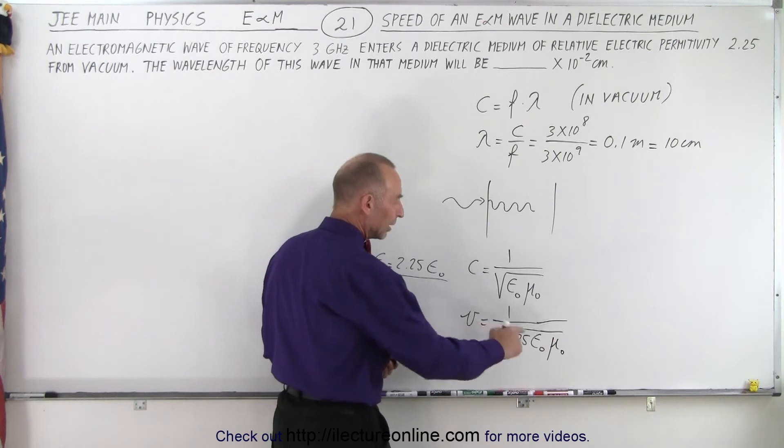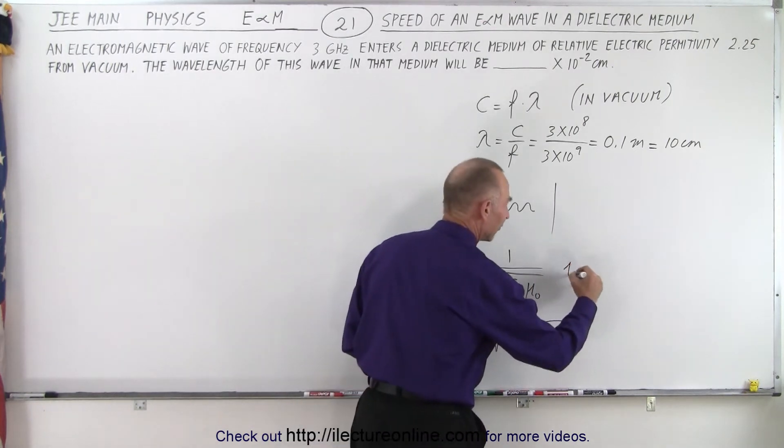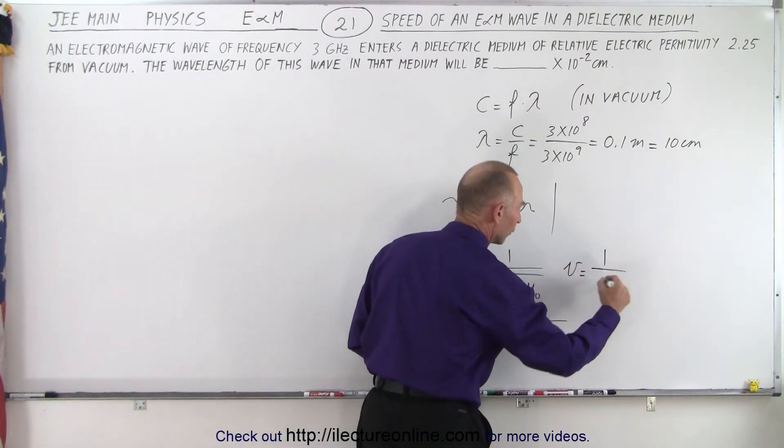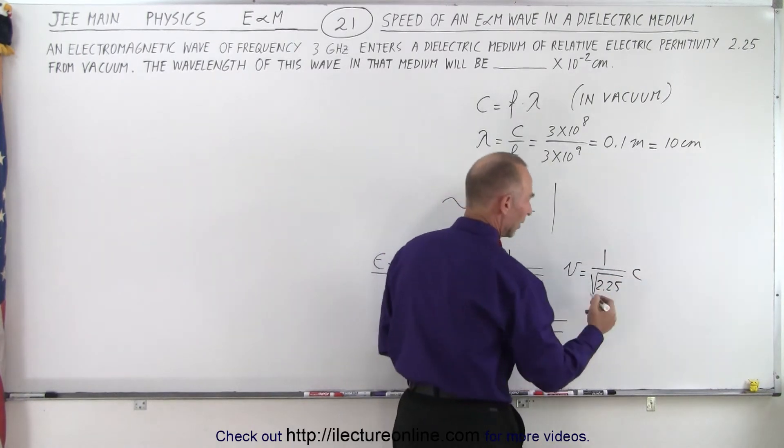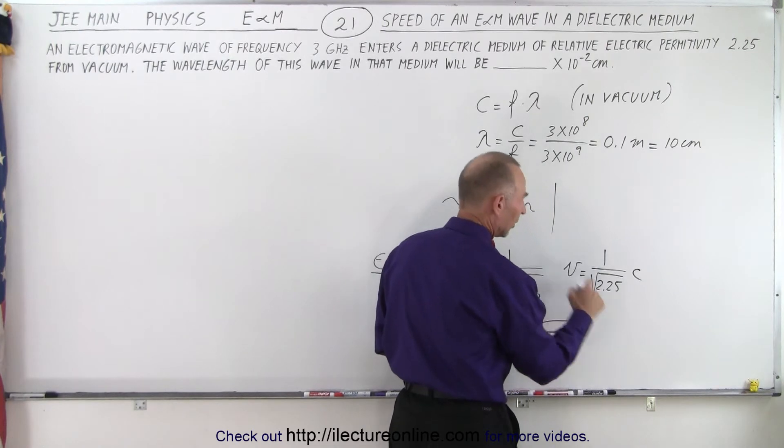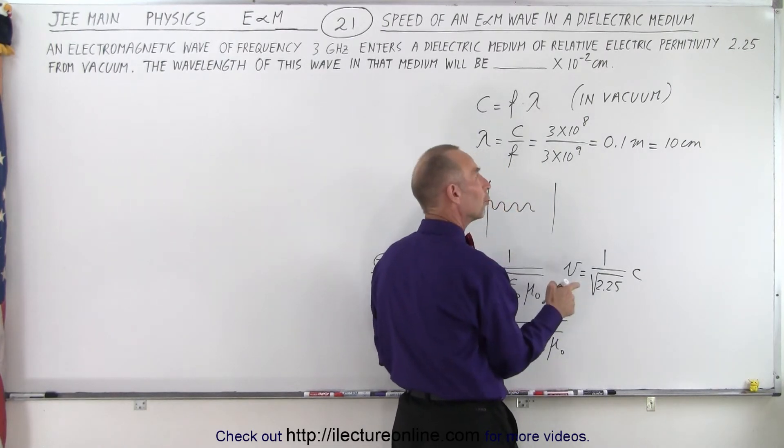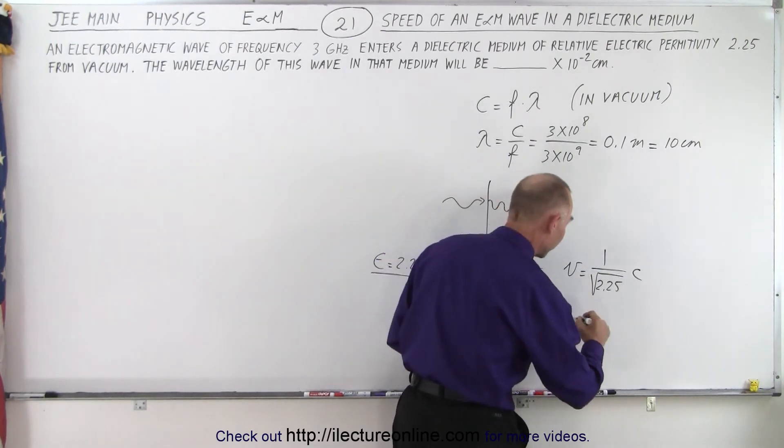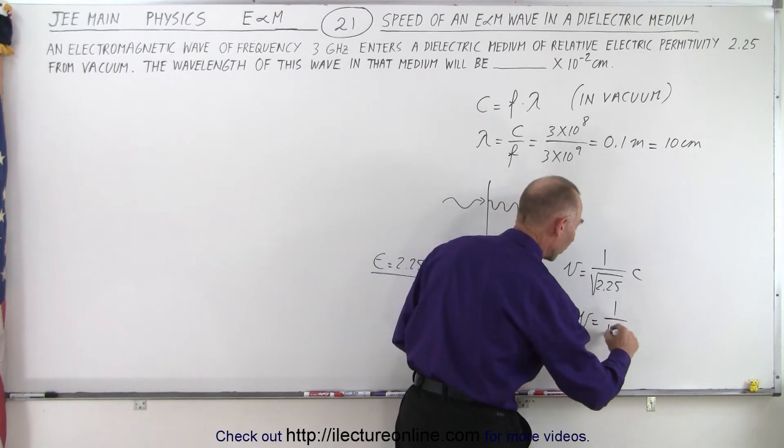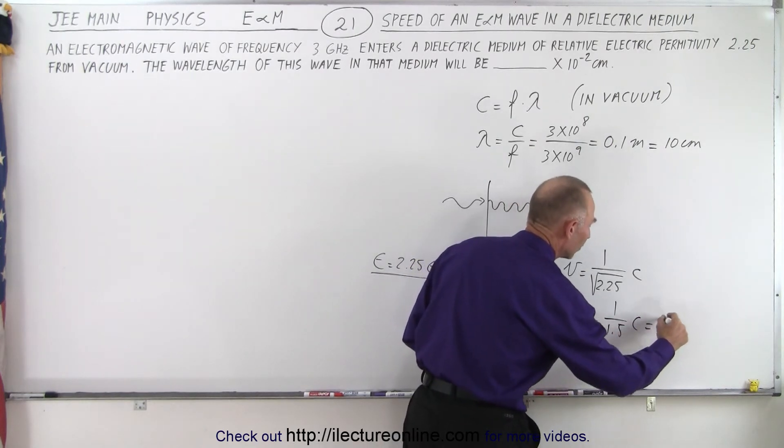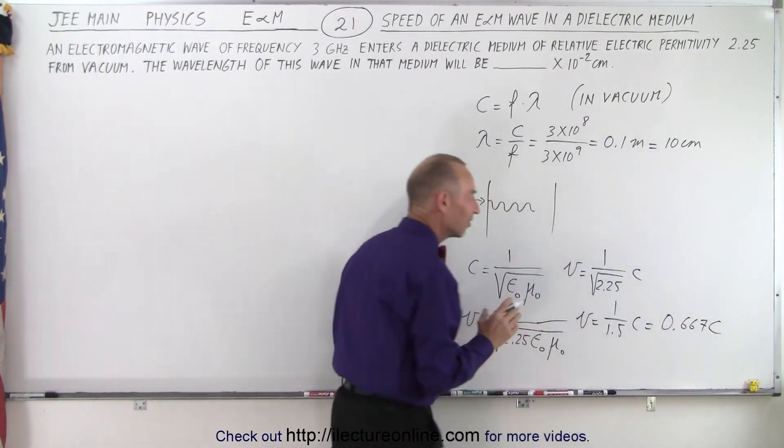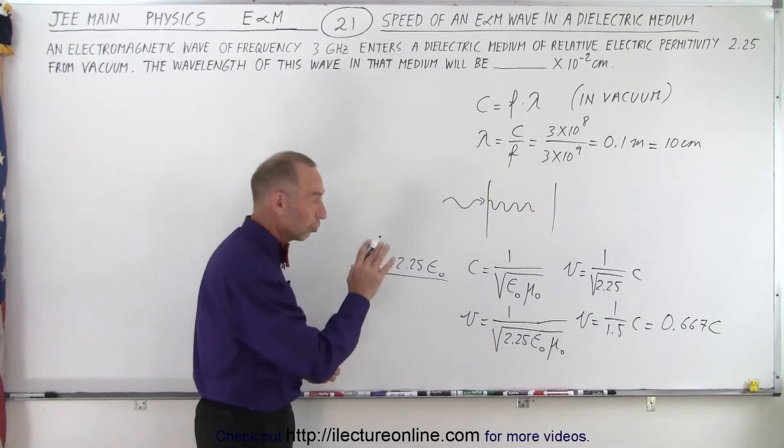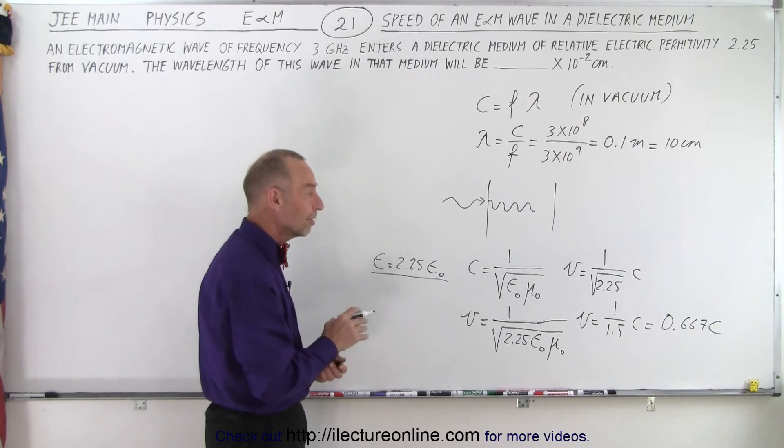And so the only difference is that now we can see that V is equal to 1 over the square root of 2.25 times c and therefore, what's the square root of 2.25? Well that's 1.5, so V is equal to 1 over 1.5 c which is 0.667 c. So we can see that the speed of light slows down to a velocity of 0.667 the speed of light.